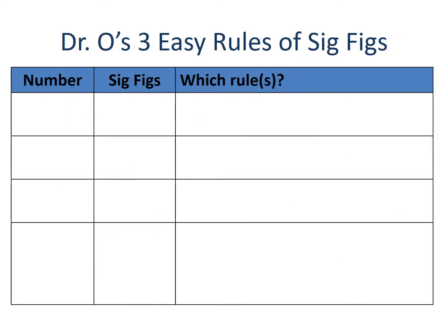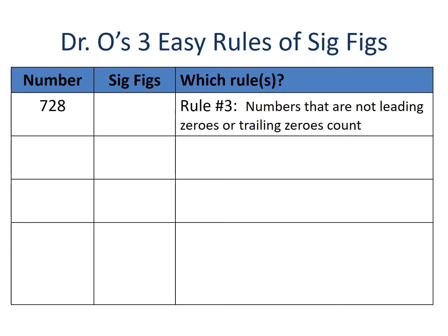Now let's mix it up and look at examples citing which rules to invoke. Our first example is 728. Rule number one doesn't apply — no leading zeros. Rule number two doesn't apply either — no trailing zeros. That leaves us with rule number three: numbers that are not leading zeros or trailing zeros count. We have the seven, the two, and the eight — three significant figures.